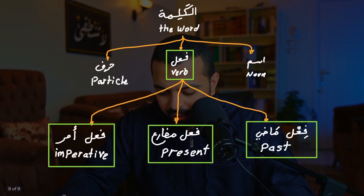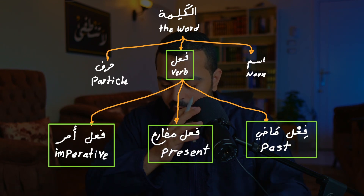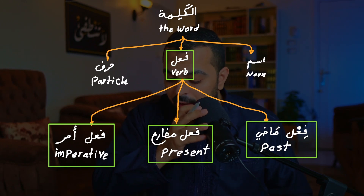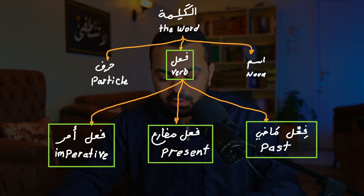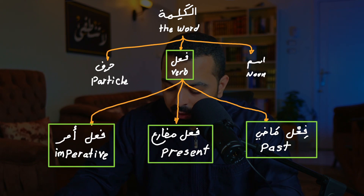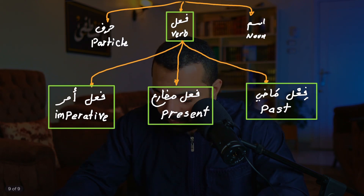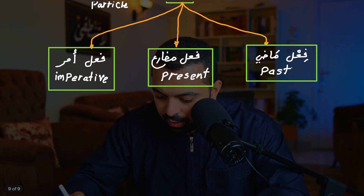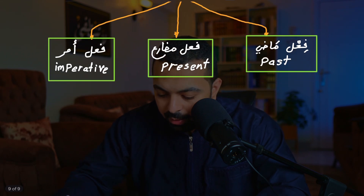As you see here, the word in Arabic is divided into three categories: ism, fa'l, harf. And then we talked about the types of the verbs: fa'l-madi, fa'l-mudara, fa'l-amr. Let's start explaining more about fa'l-madi.